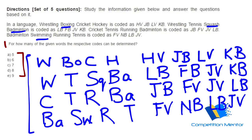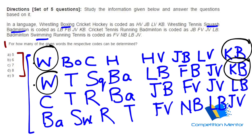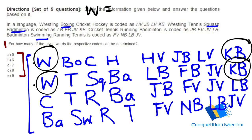Now quickly notice what is common. You can see W-W is common across two statements. Is there anything else common? No — there is T, S, Q, B, A, D, O, C, H. So you can quickly identify that W equals KB. Initially you can mark overlaps to check for any common elements.